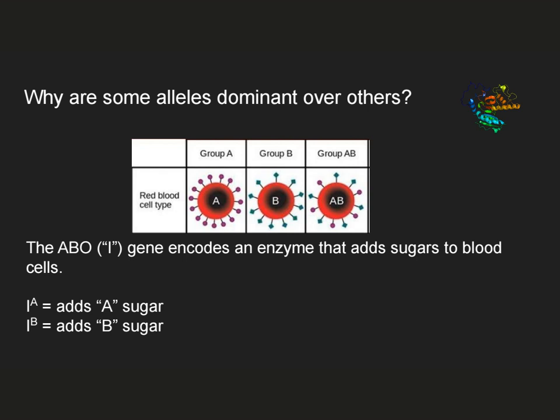Now, to talk about codominance, I'm going to move away from the flower example — these are all just examples and there are many molecular explanations for relationships between alleles. I'm switching to talking about blood type in humans. We can see that there are people with type A blood, type B blood, and type AB blood. This is conferred by the ABO gene. The protein product encoded by that gene is an enzyme that adds sugars to blood cells. The IA allele adds the A-type sugar, shown as magenta circles. The IB allele adds the B sugar, shown as turquoise diamonds.